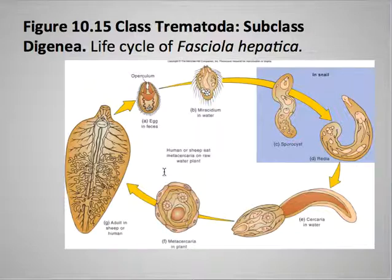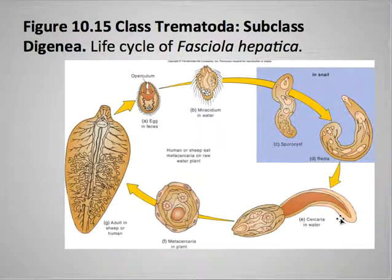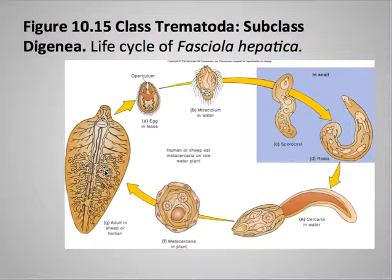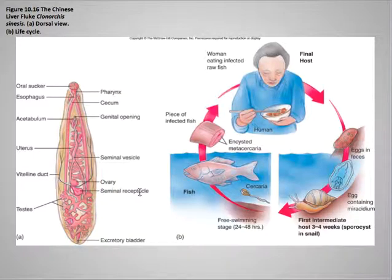That sporocyst then goes into a daughter sporocyst — so within the snail, the sporocyst goes into a redia — and then leaves the snail and goes into a cercaria in the water column. Within the water column, it encysts into a plant as a metacercarial cyst form, and then the adult goes into the final host — usually, in this particular example, a sheep or human. There is a list of several fluke species and where they are found — schistosomes are one of the more common ones.